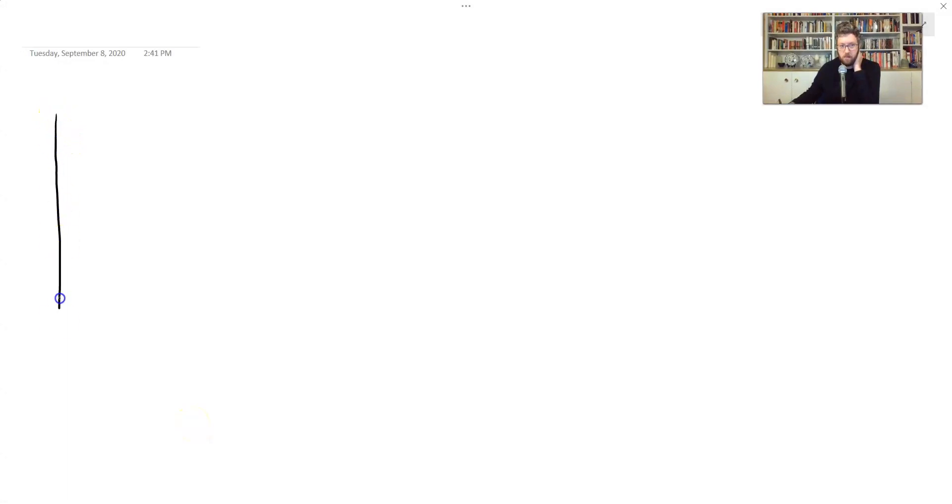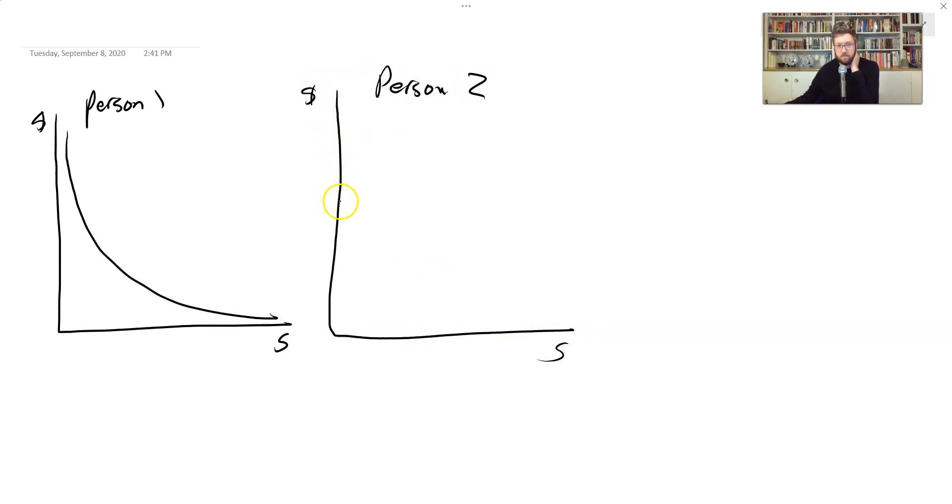Suppose we've got two people and they each demand some food—well, let's say shelter, right? Why not. Here's person one and their demand may look like this. And here's person two, their demand might look like this.